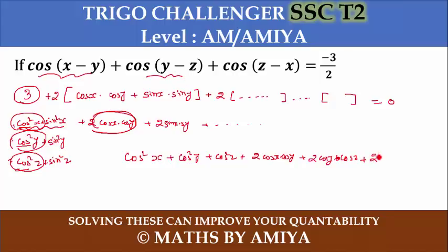Similarly you have sin² terms: sin² x, sin² y, sin² z plus 2 sin xy, 2 sin yz, 2 sin zx. If you combine everything, it becomes like a² + b² + c² + 2ab + 2bc + 2ca. That is nothing but (cos x + cos y + cos z)² plus (sin x + sin y + sin z)² equals zero.